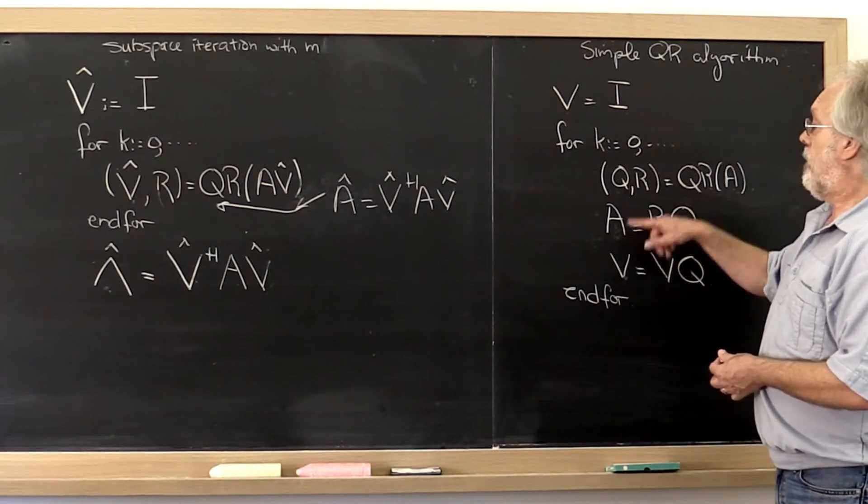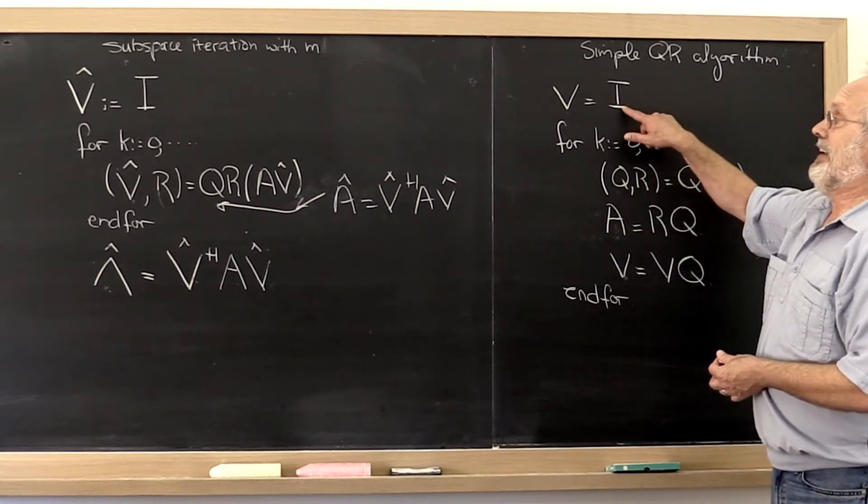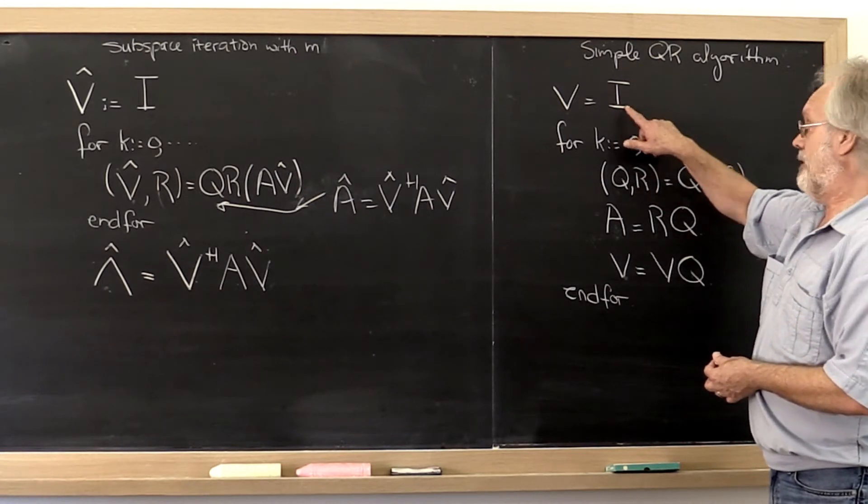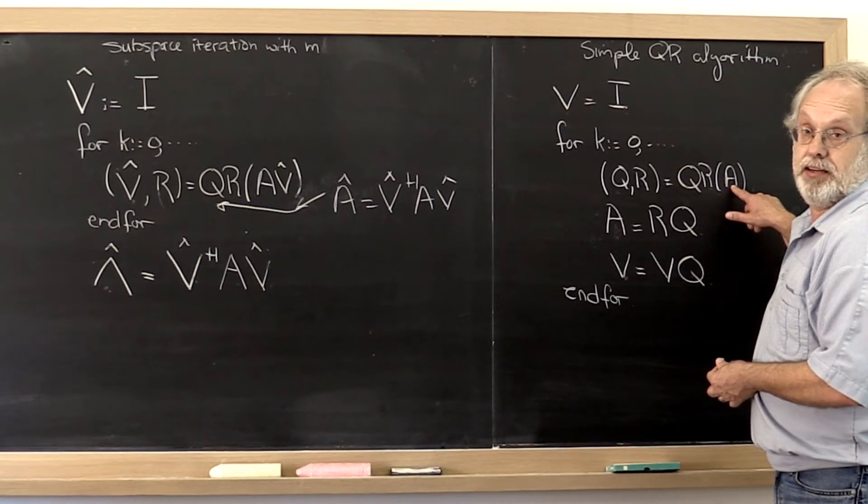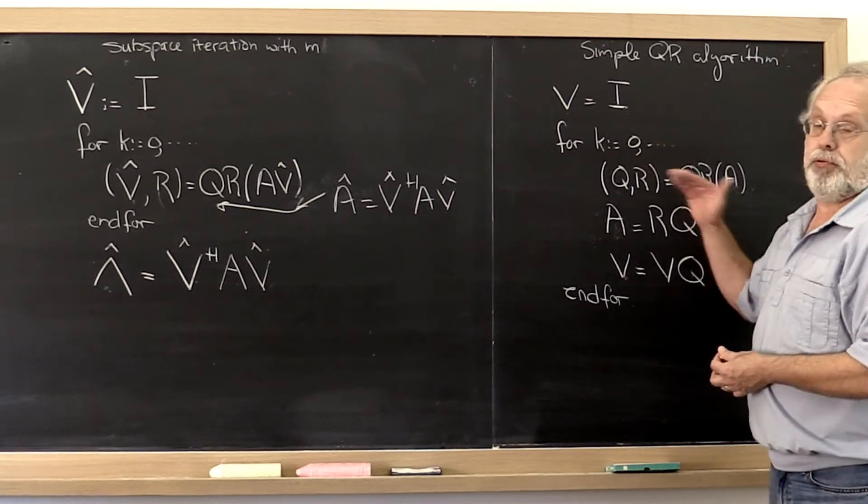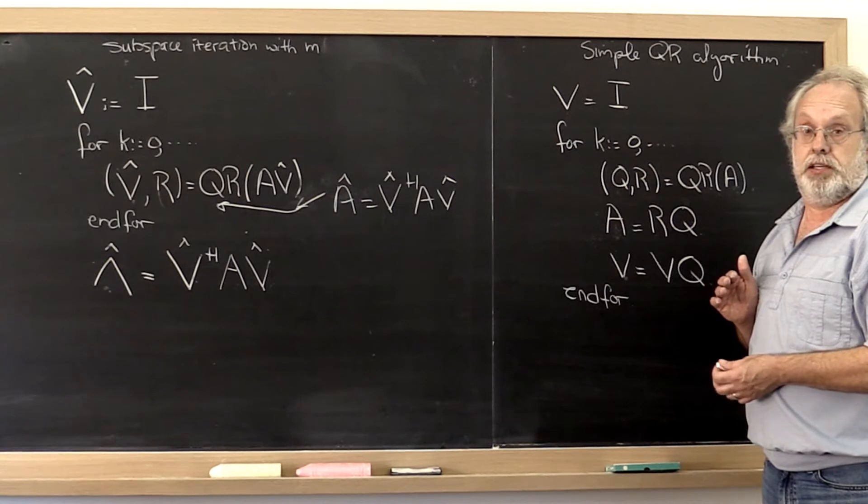But now by resetting the matrix V, the matrix that we multiply A by to be the identity, and then do another step of our subspace iteration.